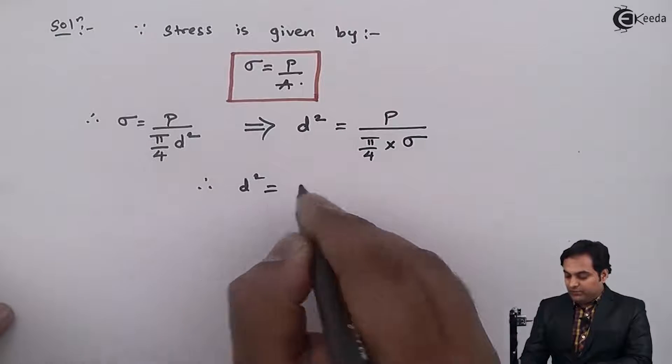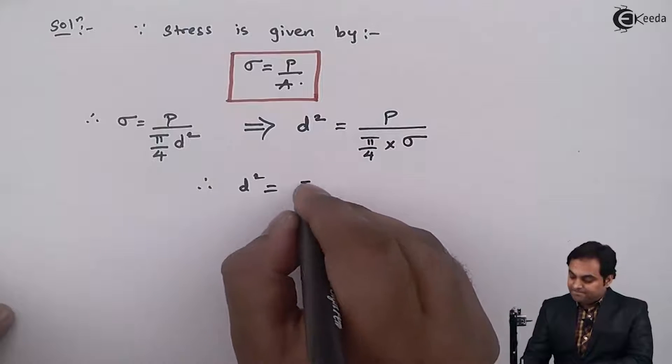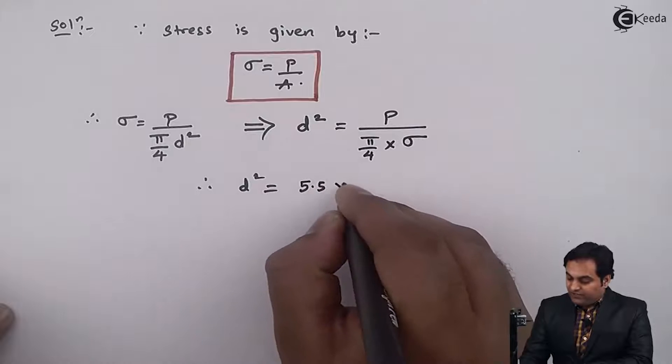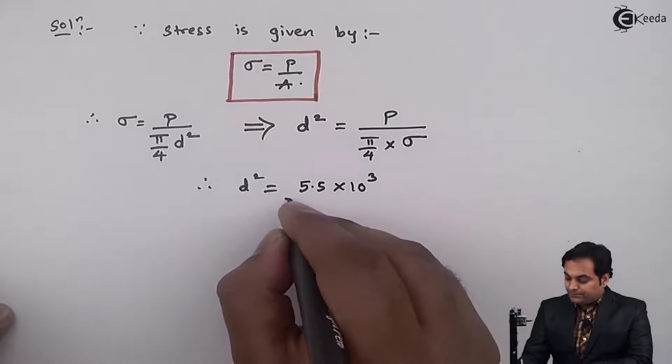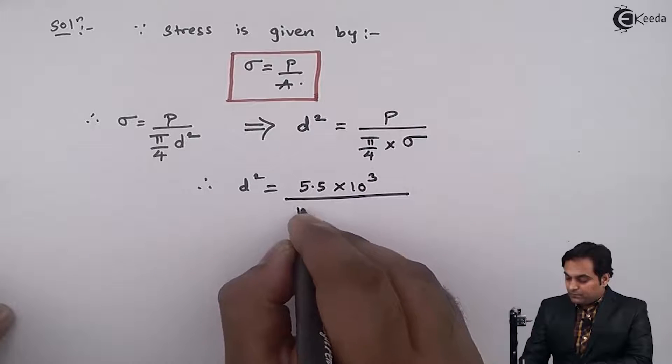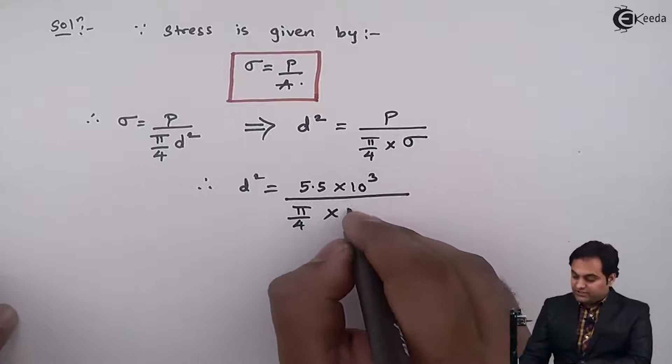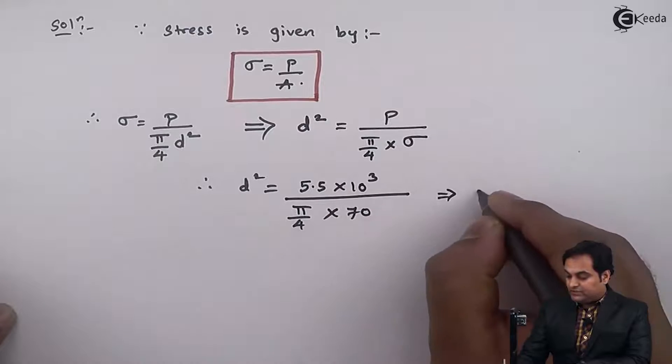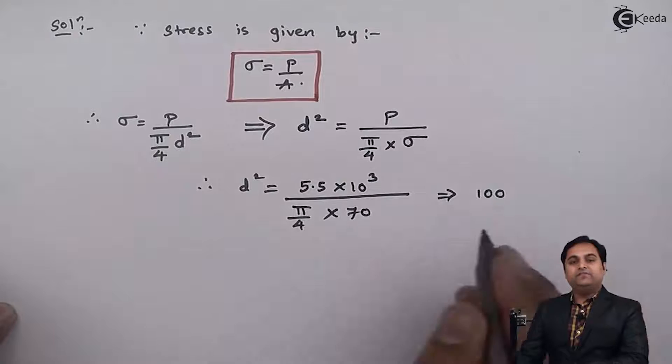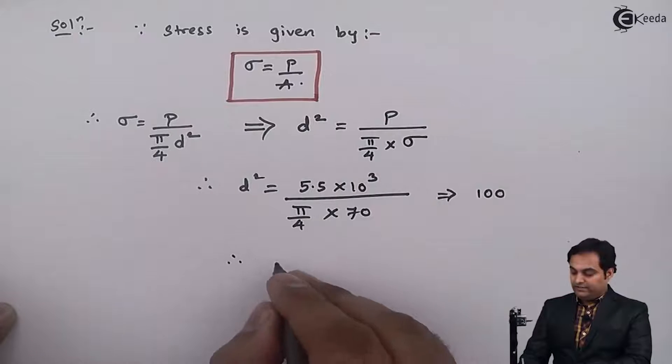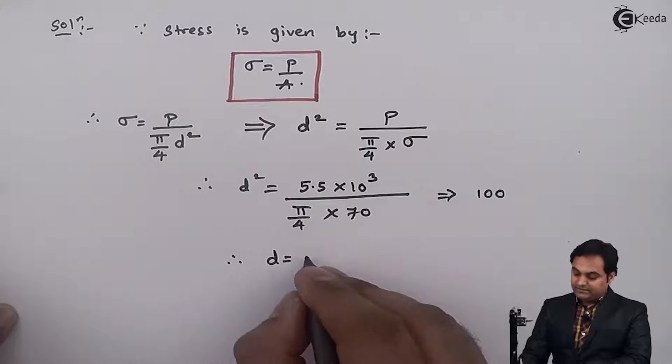Then D square will be equal to P is given as 5.5 into 10 raise to 3, sigma is given in the question as 70. So I will get D square answer as 100 and if I take the square root I will get the answer of D as 10 mm.